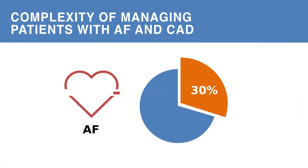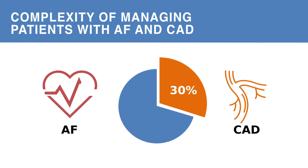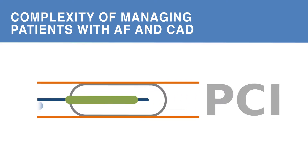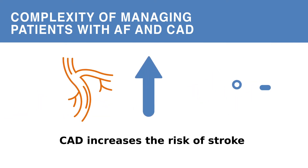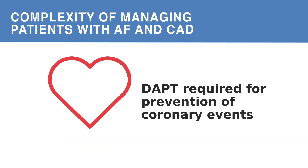Up to 30% of atrial fibrillation patients also have coronary artery disease or CAD, with a significant proportion requiring percutaneous coronary intervention or PCI. The presence of CAD increases the risk of stroke, which is already elevated in patients with AF or flutter. An oral anticoagulant or OAC is indicated for the prevention of thrombotic events related to AF, whereas antiplatelet therapy is required for the prevention of coronary events after an acute coronary syndrome or after PCI.